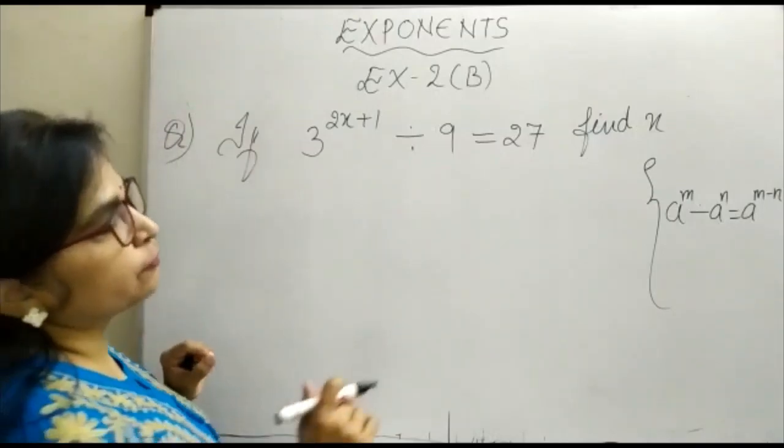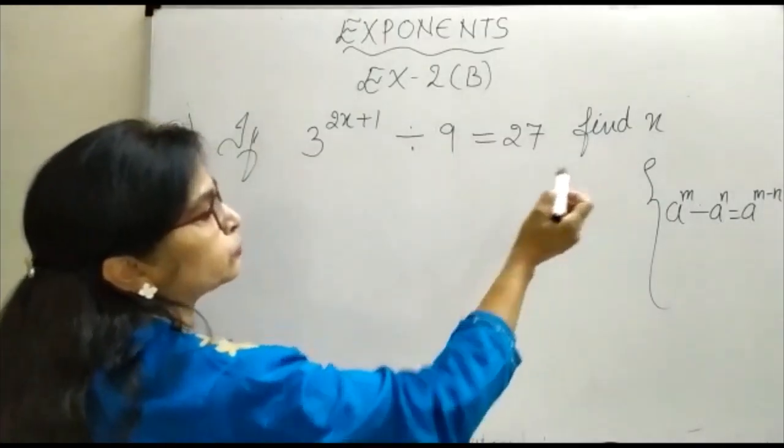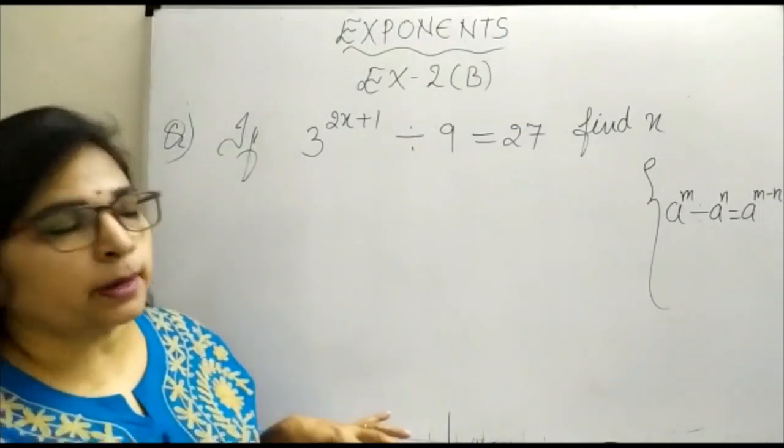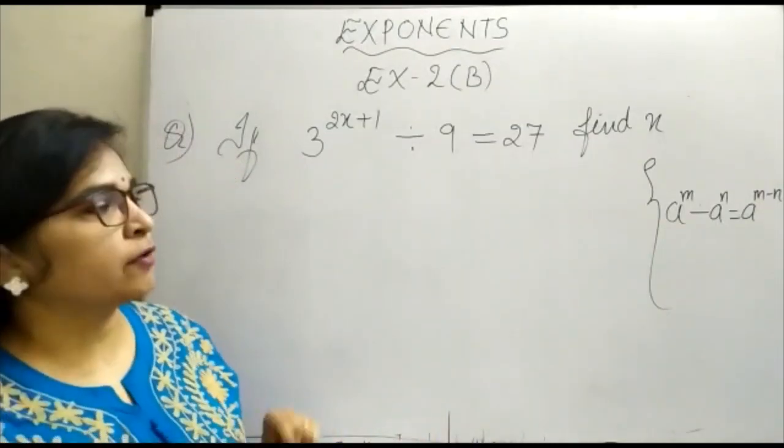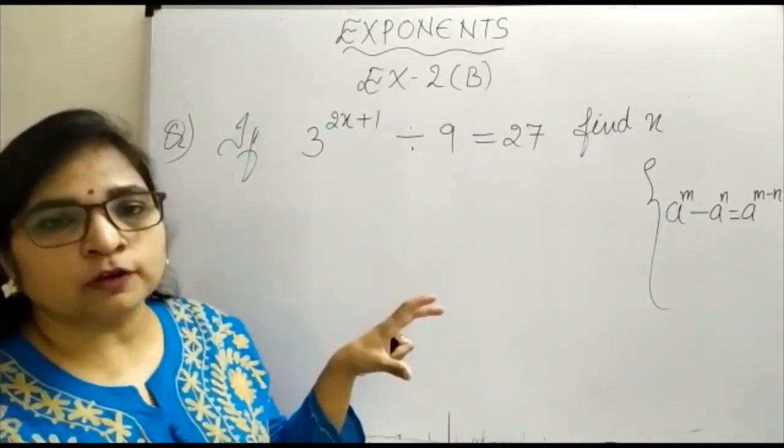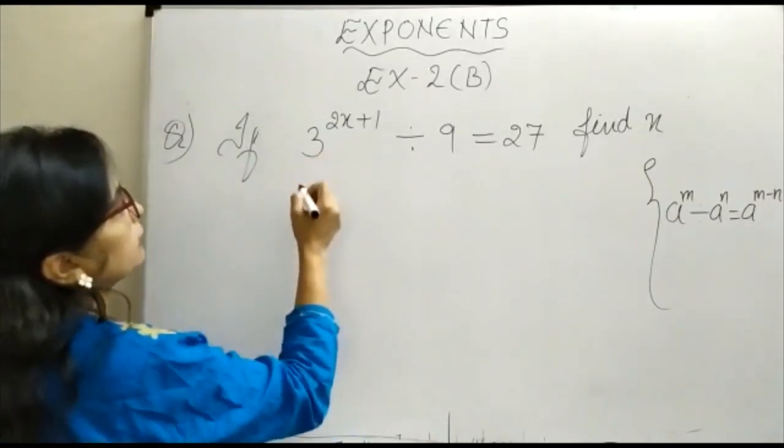We are going to use the formula here: a to the power m divided by a to the power n is equal to a to the power m minus n. You have studied this in your exponents. Let us see here.